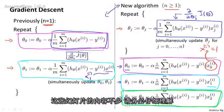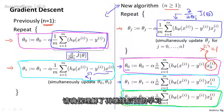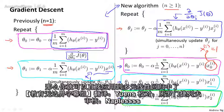There's a lot going on on the slide. So I definitely encourage you, if you need to, to pause the video and look at all the math on the slide slowly to make sure you understand everything that's going on here. But if you implement the algorithm written up here, then you will have a working implementation of linear regression with multiple features.